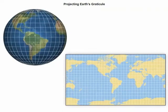Although a globe can show Earth's graticule and landmasses without distortion, a flat map cannot. Different map projections maintain certain characteristics at the expense of others. This is why different map projections are created for different purposes.